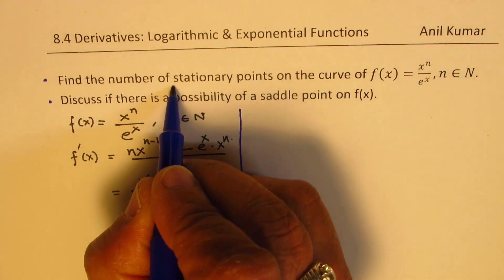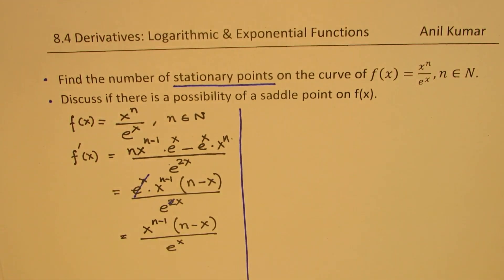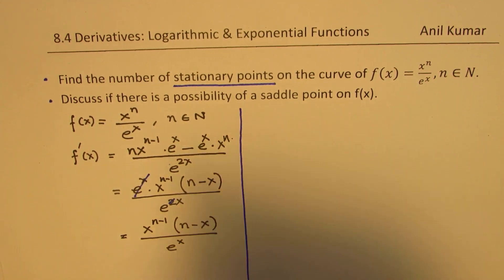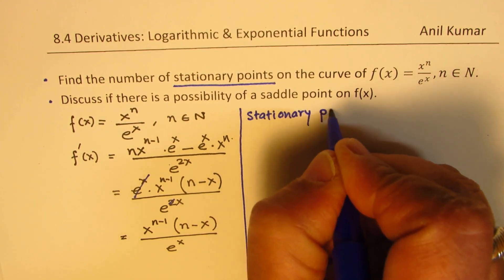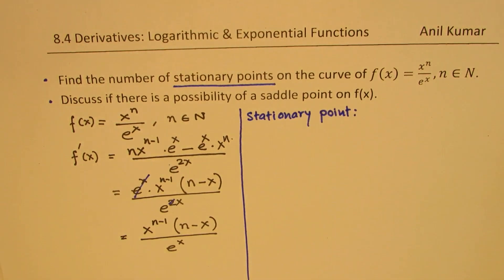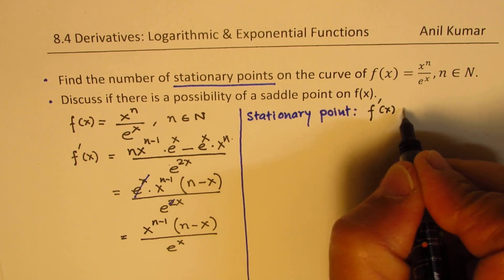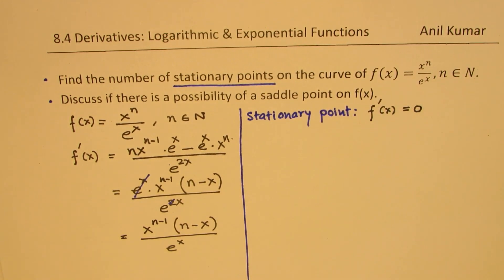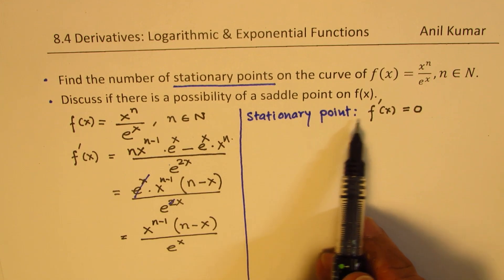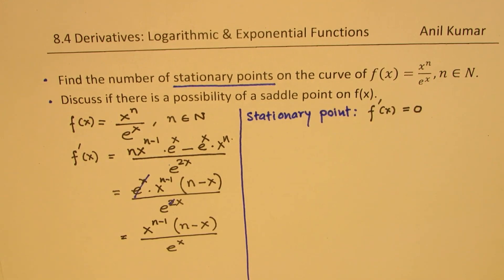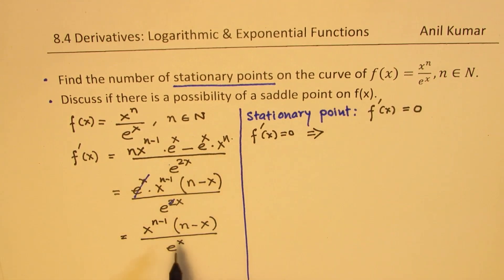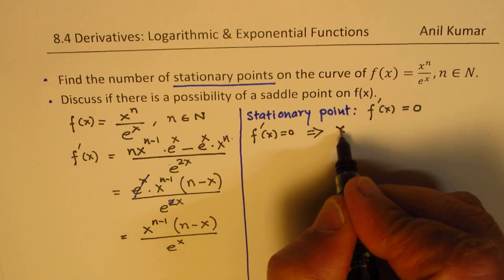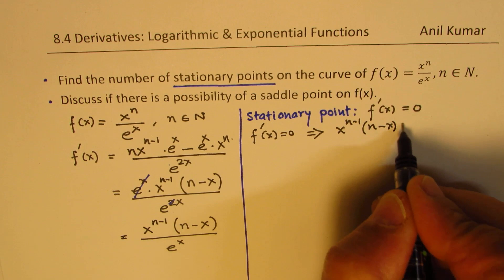Now, what is a stationary point? A stationary point is a point where the derivative of the function is equal to 0. That is important. So in this particular case, when is f'(x) = 0? f'(x) = 0 implies the numerator should be 0, which means x^(n−1) · (n − x) = 0.